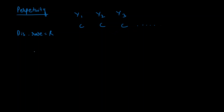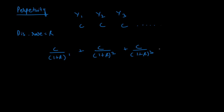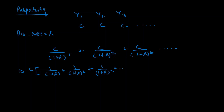Now let's discount all of these values to figure out the present value of a perpetuity. For year one we'll have C divided by (1 + R) raised to the power one. For year two we'll have C divided by (1 + R) squared. For year three we'll have C divided by (1 + R) cubed, and so on. We can see that C is common in all of these terms, so we take it out and we are left with within brackets: 1/(1+R) + 1/(1+R)² + 1/(1+R)³ and this will go on.